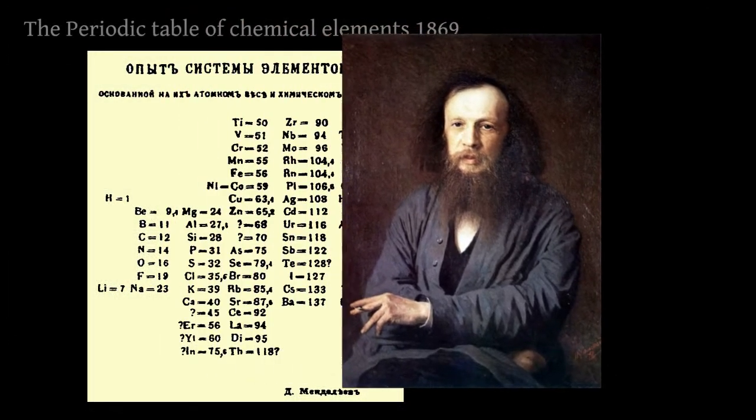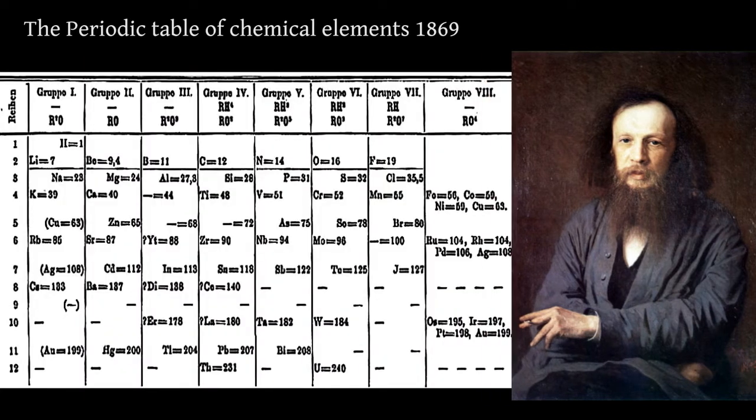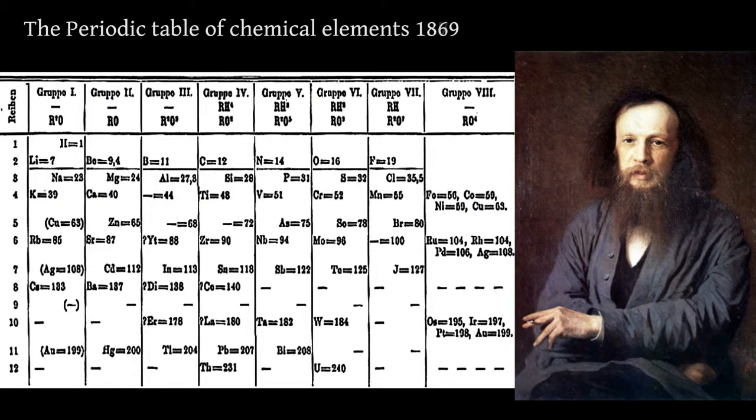This is the first variant of the table which was published by Mendeleev. It has an unusual form with exchanged columns and rows. This is the usual form of his table, which was published two years later. Mendeleev arranged all known elements in the table and found that some cells are empty.